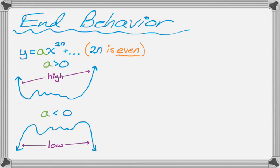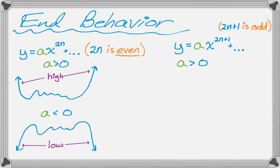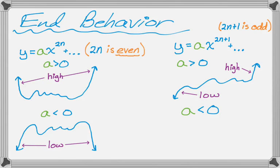We can also have similar patterns apply to an odd-powered polynomial. If the highest degree is odd — 2n plus 1 will always be odd because n is an integer. If a is greater than 0, it's going to start low and end high. And if a is less than 0, the behavior flips — instead of starting low and ending high, it's going to start up high and end low.